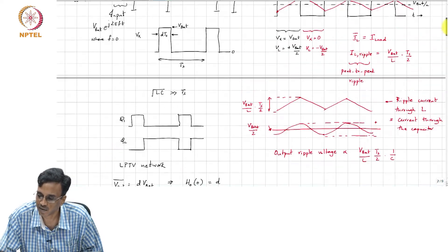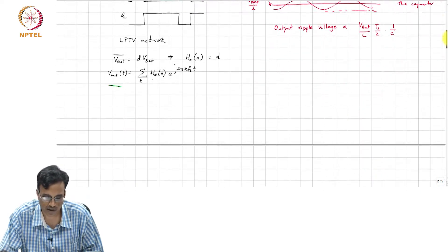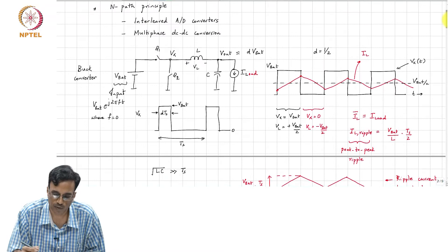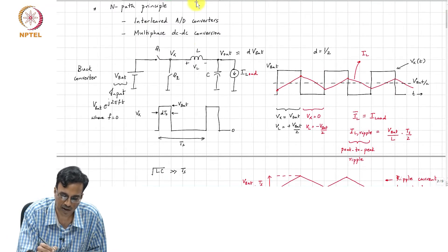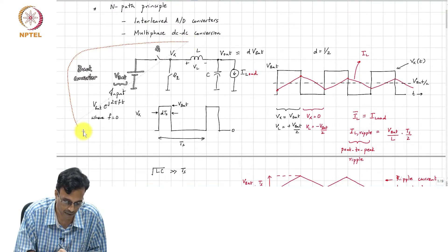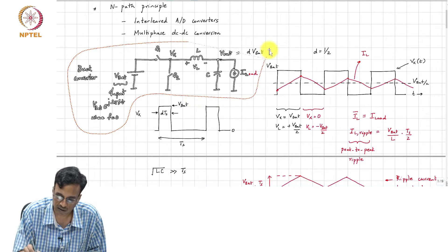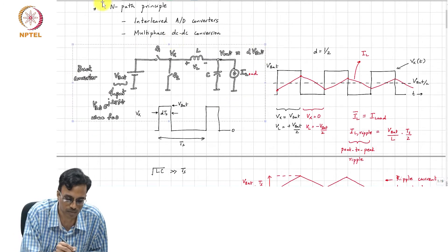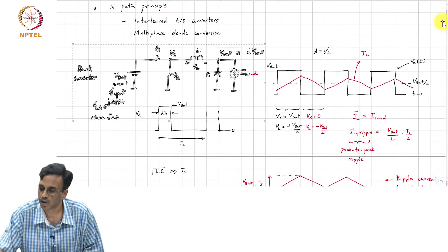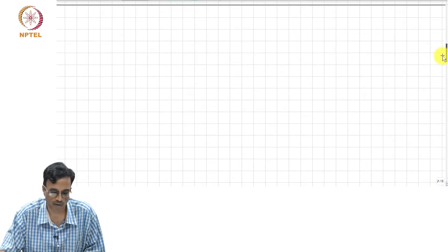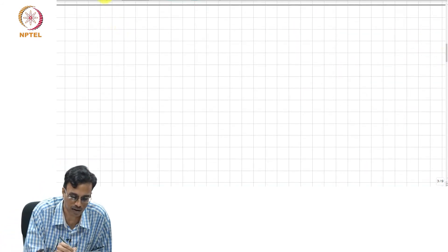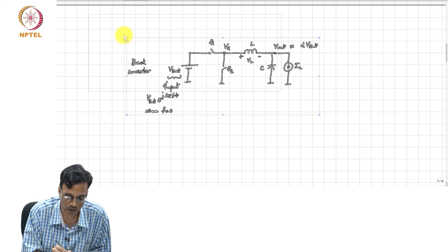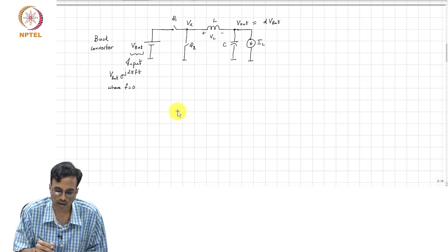I'm going to take a special case for our DC-DC converter where we assume that D is half. I'm going to use this as a special case to illustrate the principle. Multiphase DC-DC converter is a vast area in itself and it does not make sense for me to talk about those things in this course.